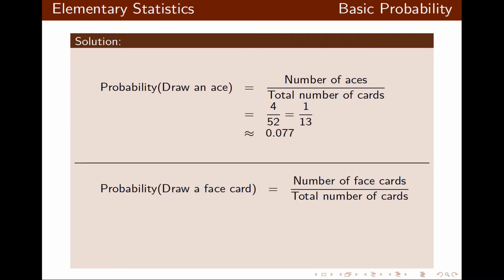The probability of drawing a face card will be the number of face cards divided by the total number of cards. There are 12 face cards out of 52 total cards, and that fraction reduces to 3 over 13, which we can also express as a decimal.